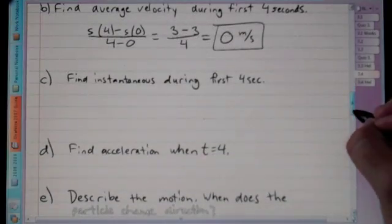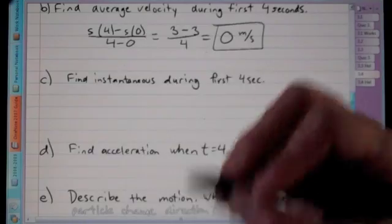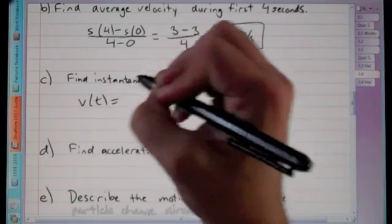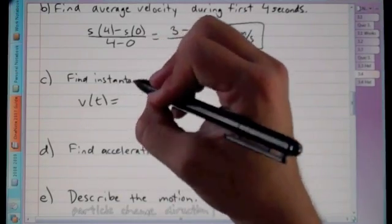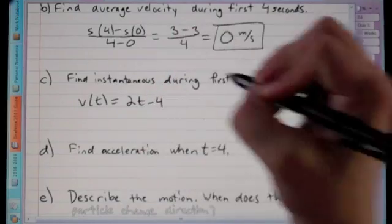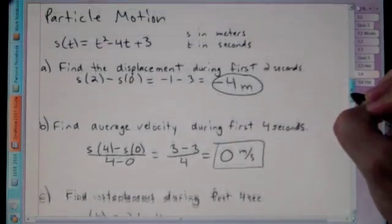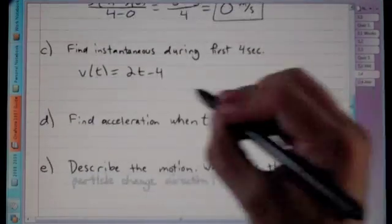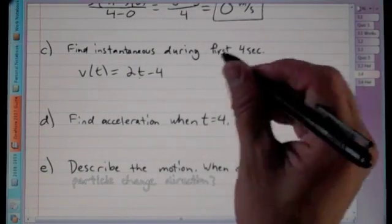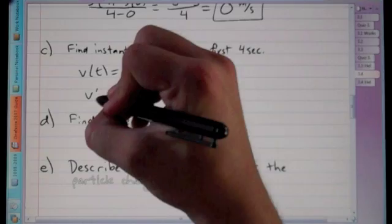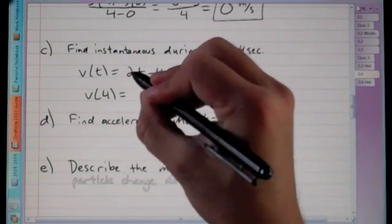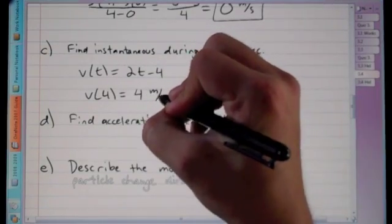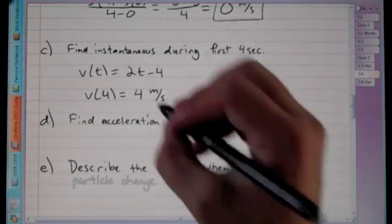Instantaneous velocity requires the derivative. Taking the derivative of s(t) = t² − 4t + 3 gives v(t) = 2t − 4. At t = 4 seconds: v(4) = 8 − 4 = 4 meters per second.